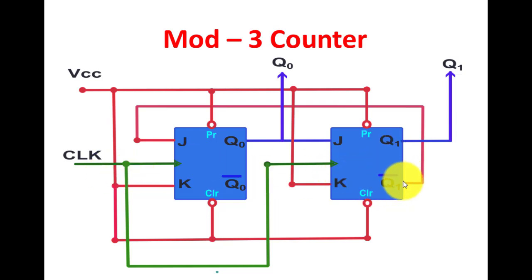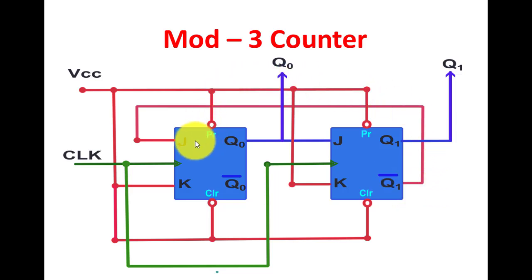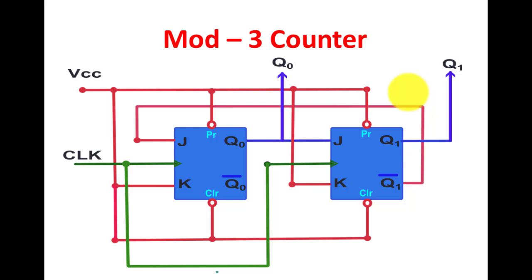Q1-bar, that is the complemented output of the second flip-flop, is connected to J of the first flip-flop. Here we have the outputs Q0 and Q1 — these are the two outputs we will analyze. Now let us see the working.